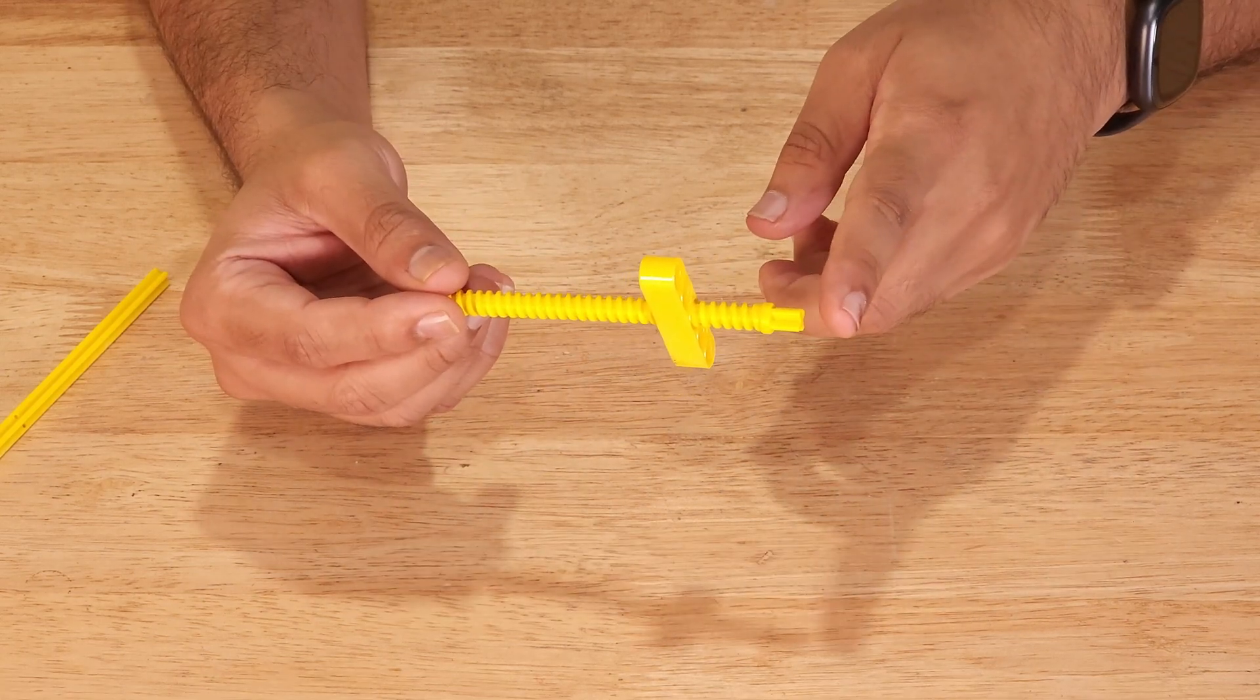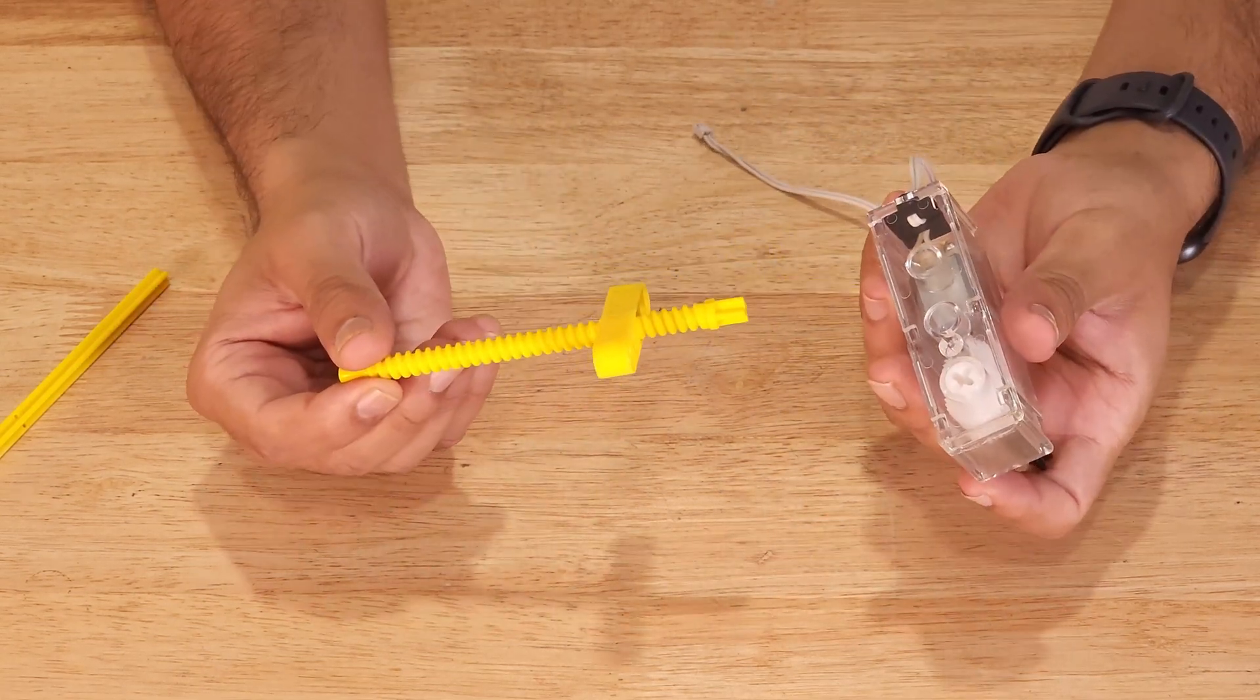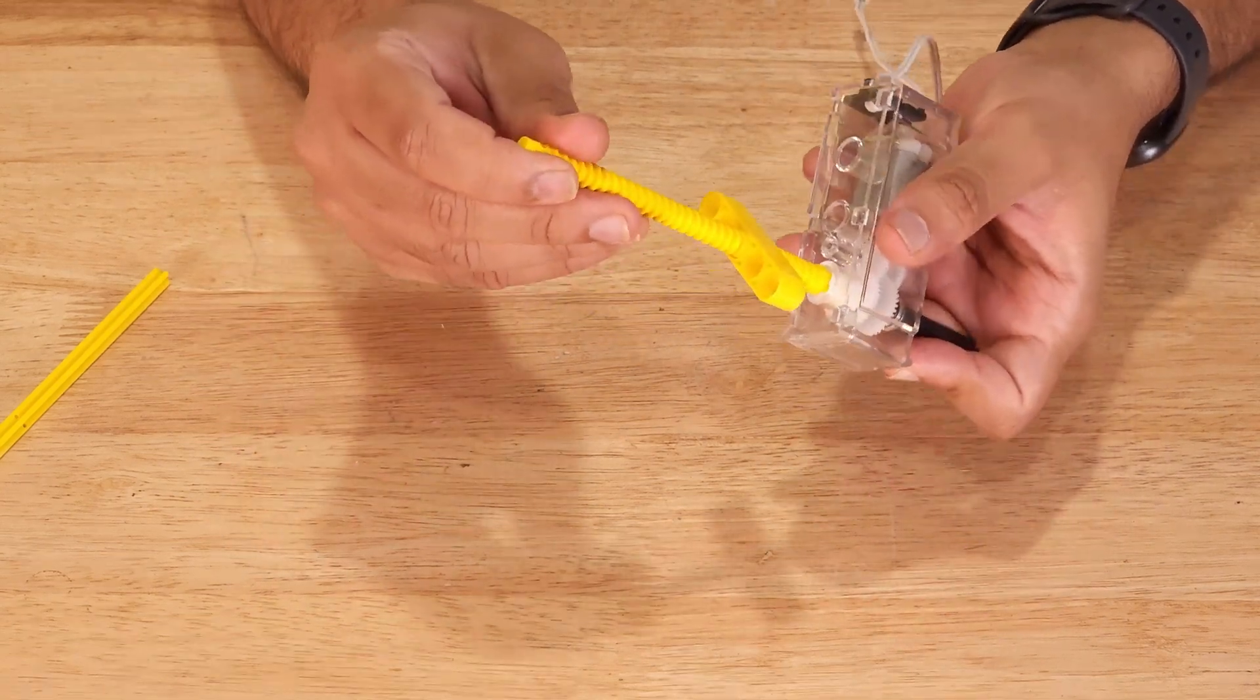Power screw can be attached to the motor from this end and this end remains free. This is the motor and you attach power screw like this.